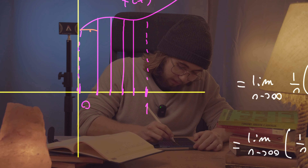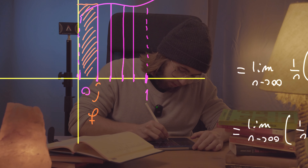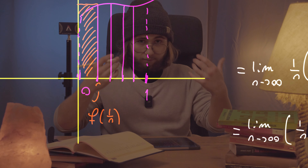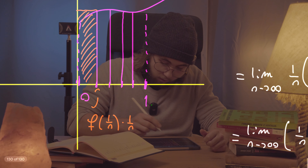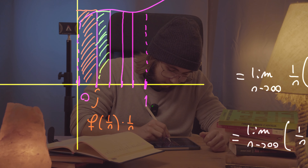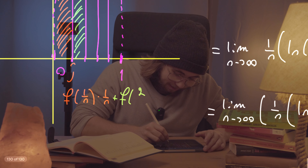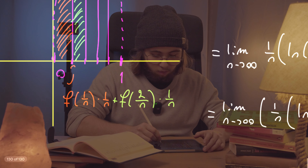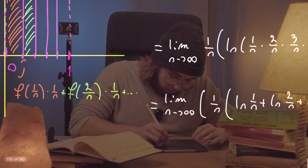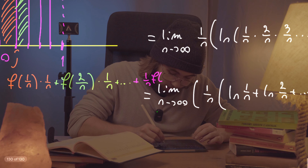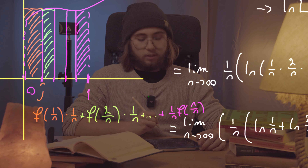Using the right-hand rule, the area of the first rectangle is f(1/n) × (1/n), which is the function evaluated at the right endpoint of the first sub-interval multiplied by its width. The area of the next rectangle is f(2/n) × (1/n), and we continue like this all the way up to f(n/n) × (1/n) for the last rectangle.